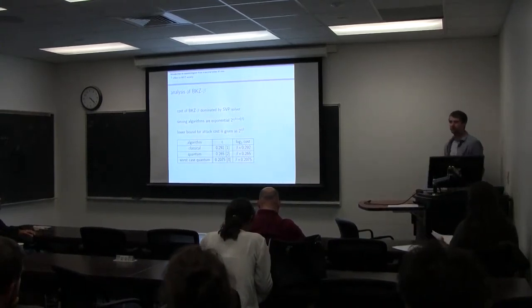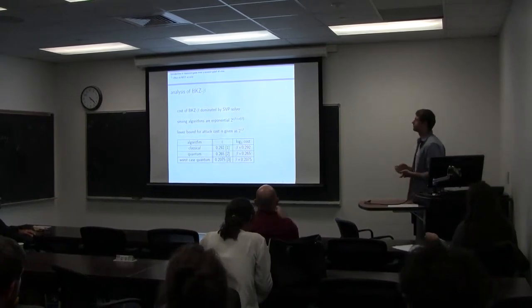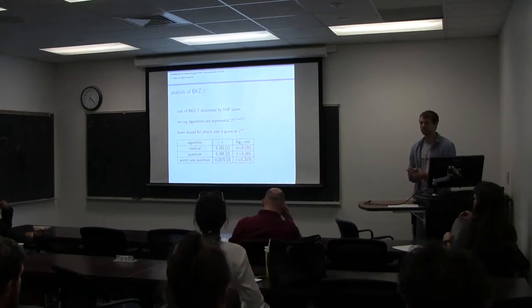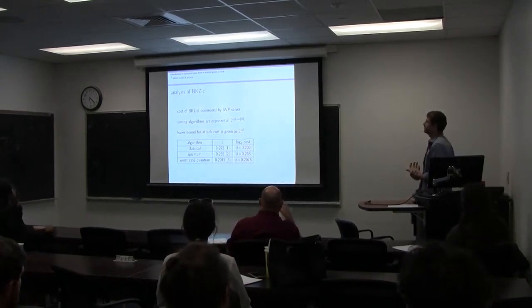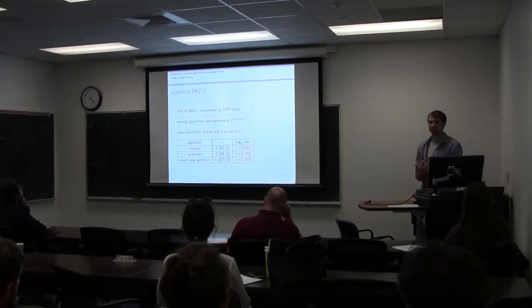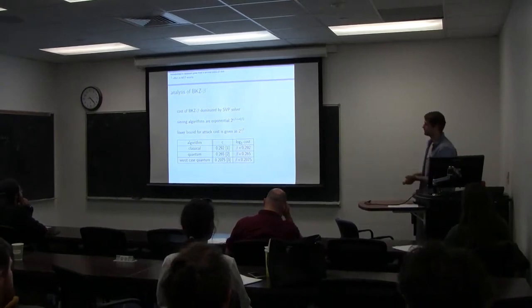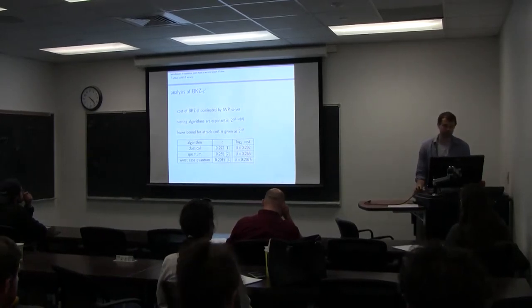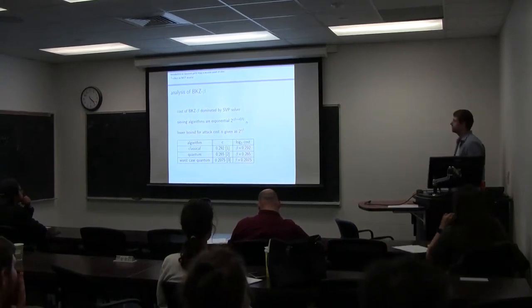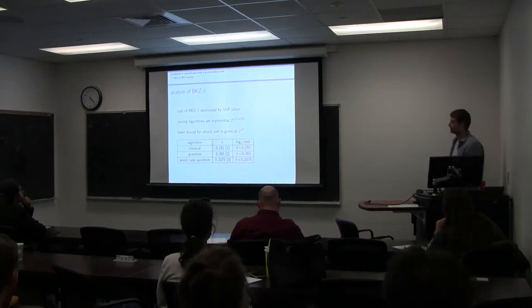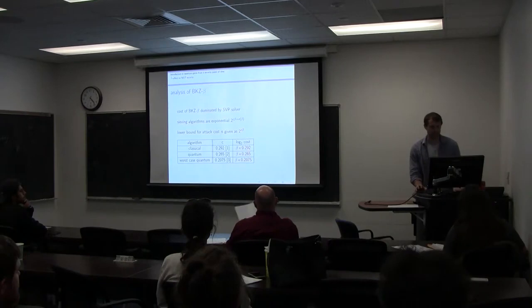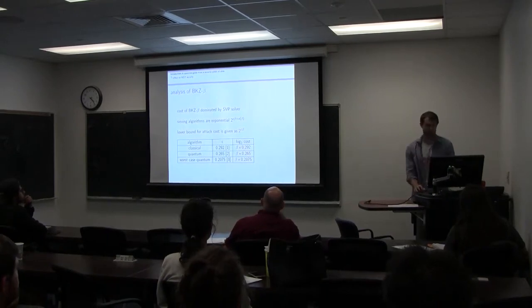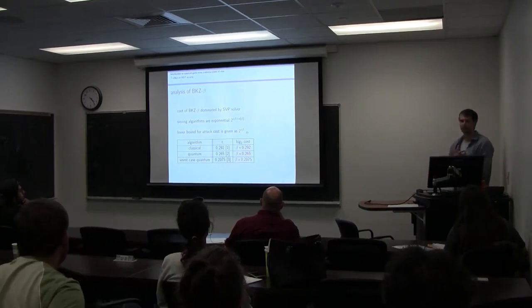Naturally we want to look at how expensive this attack is going to be. The entire algorithm is going to be dominated by that small shortest vector problem solver — focusing on a smaller-dimensional lattice instead of the big picture. So we actually want to look at the complexity of a shortest vector problem solver instead of BKZ as a whole. One of them I mentioned was a sieving algorithm. They are exponential, but they give us a good lower bound starting point for these security requirements. A lower bound for an attack cost is going to be 2 to the power of (c times beta), where beta is the block size — the dimension of the sub-lattice — and c is some constant.